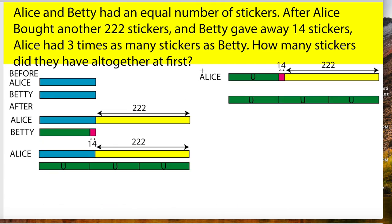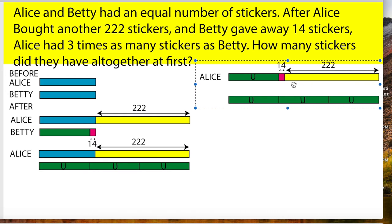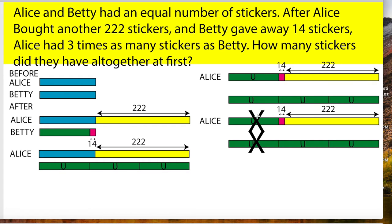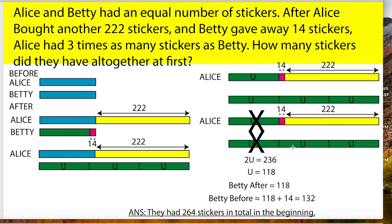Now you put Betty after into Alice's model. As you can see, 222 plus 14 is equal to two units. Since 222 plus 14 gives us 236, we know that one unit equals 118.